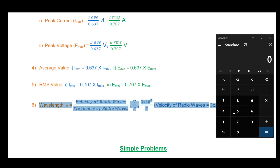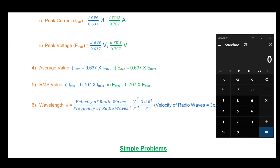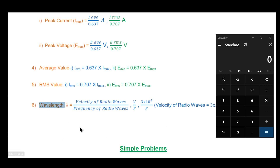Next is the wavelength formula. Wavelength is denoted by the Greek letter lambda (λ). The wavelength formula is: λ equals velocity of radio waves divided by frequency. The velocity of radio waves is fixed at 3 × 10⁸ meters per second. Using this fixed velocity, we can calculate wavelength in meters from frequency.